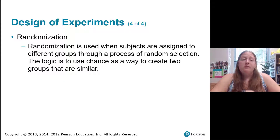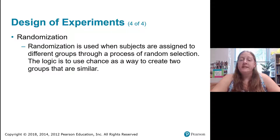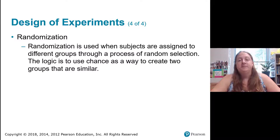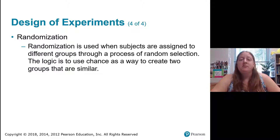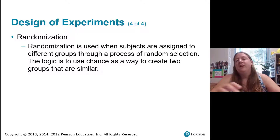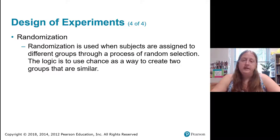Finally, we have randomization. Randomization is used when subjects are assigned to different groups through a process of random selection. The idea is that if we randomly assign subjects, we'll end up with groups that are relatively similar to one another.